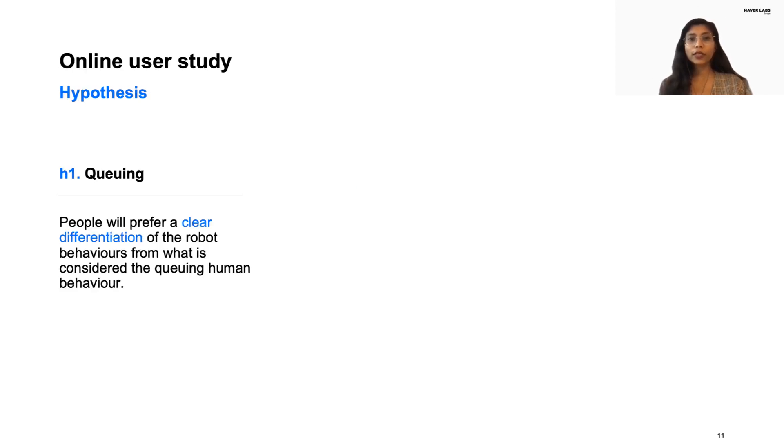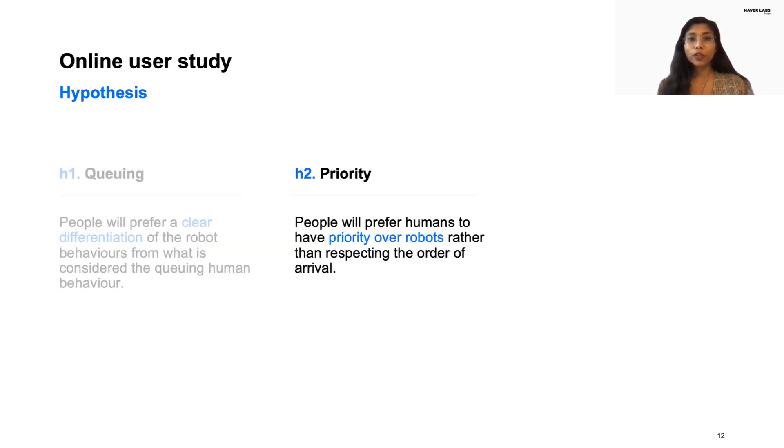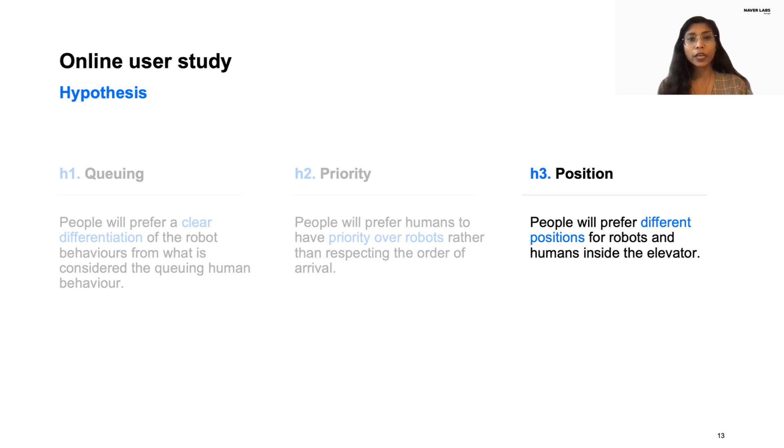Next, we conducted an online study to evaluate our approach of adopting machine-like behaviors within our context. We had the following hypotheses. First, people will prefer a clear differentiation of the robot behaviors from the queuing behavior by humans when waiting for the elevator. Second, people will prefer humans to have priority over robots rather than respecting the order of arrival. Third, people will have different position preferences for robots and humans inside the elevator.